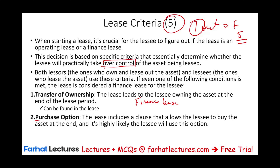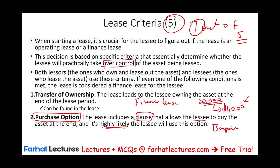Criteria two: is there a bargain purchase option? The lease includes a clause allowing the lessee to buy the asset at a price so attractive that it is highly likely the lessee will use this option. For example, if at the end of the lease the asset's estimated fair value is $20,000 but the lessee can buy it for $1,000, no one would pass that offer — that is a bargain purchase option. If this is available, we have a finance lease.